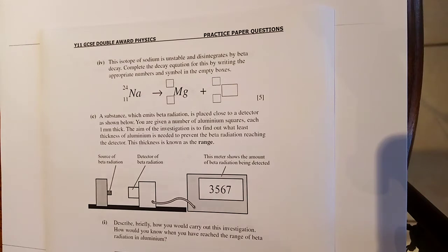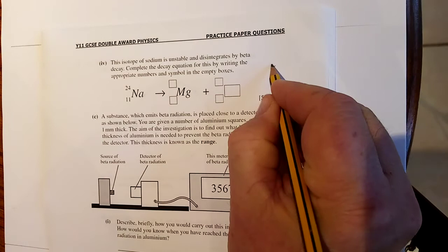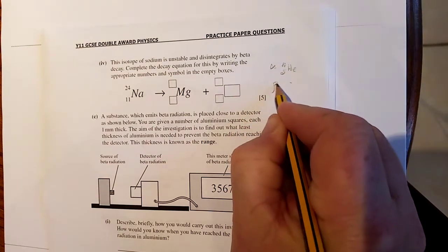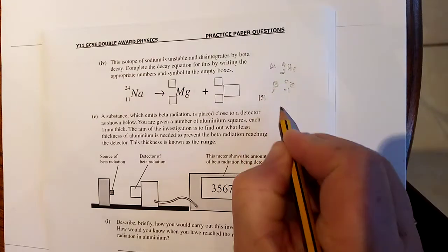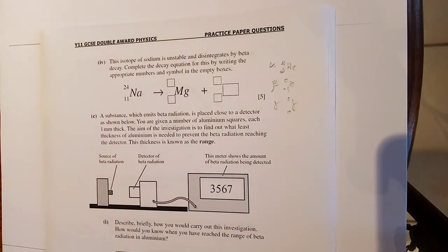Question number two, part four. Again, five marks for this. And all you need to know is alpha is 4, 2, He. Beta is 0, -1, e. And gamma, gamma, 0, 0. If you don't know that, you can't answer the question. You're going to miss five marks.